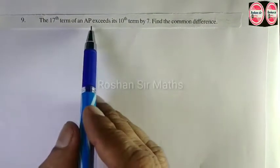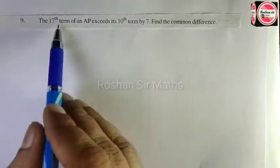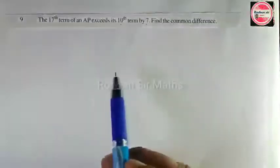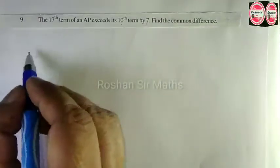The 17th term of an AP exceeds the 10th term by 7. Find the common difference. First we have the solution.